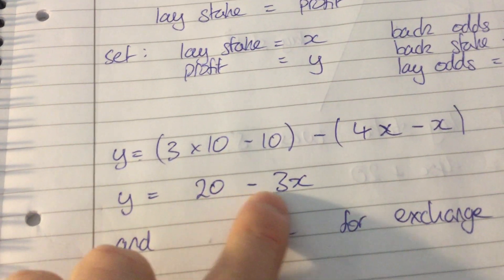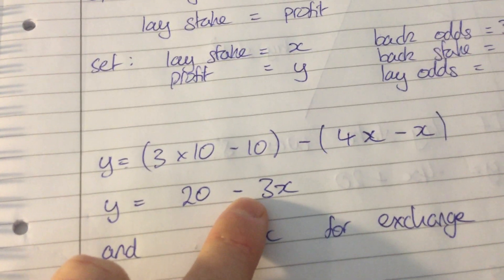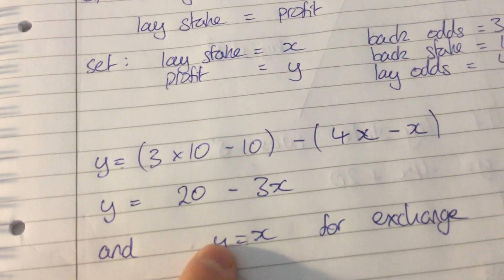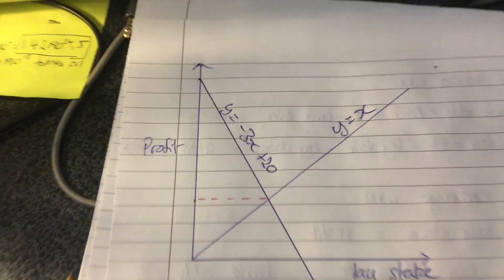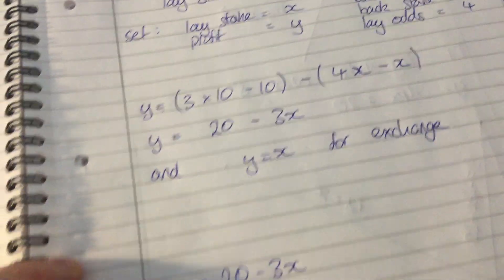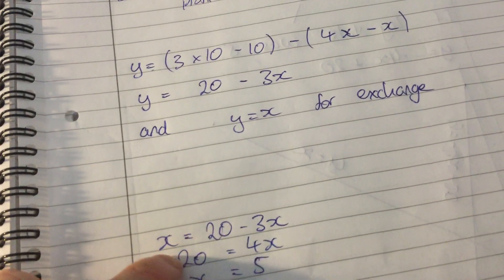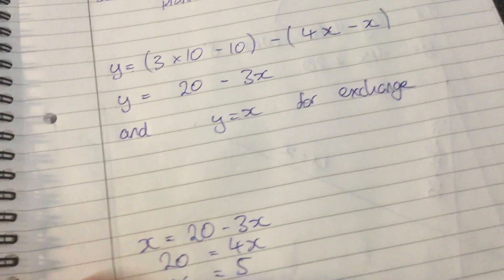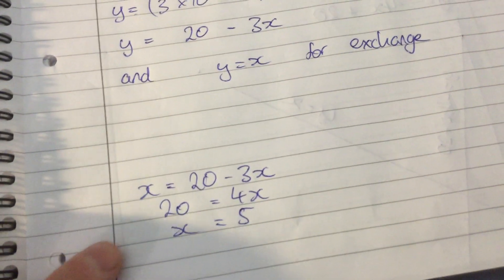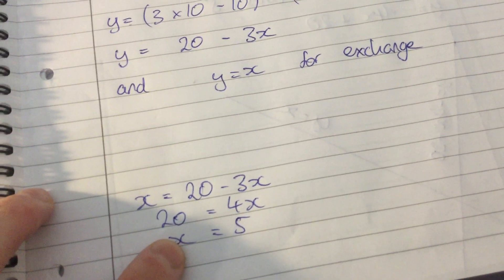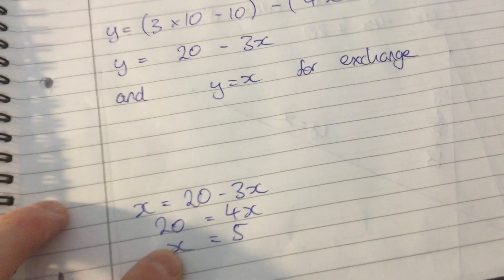In order to calculate that you simply go back to this equation here, which is our equation for if the bookies win. And we know that the condition for where the two lines meet, y is equal to x, because that's where the line intersects. So we simply replace y in the equation - this was normally y is equal to 20 minus 3x, but now it's x equal to 20 minus 3x. And simplifying we can find out that our lay stake in order to guarantee a profit regardless what outcome comes in is equal to five pounds.